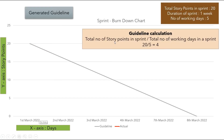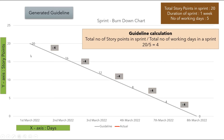The formula for the guideline is: total number of story points divided by total number of working days. In our case, that is 20 divided by 5, which equals 4. This means the guideline suggests that every day, the team has to burn down or complete 4 story points to successfully complete all user stories in the sprint, so that story points reach zero on the last day.